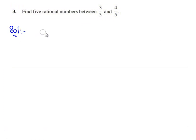Now let's move to the solution. The given two rational numbers are 3/5 and 4/5. To obtain five rational numbers between 3/5 and 4/5, let us first consider 3/5.